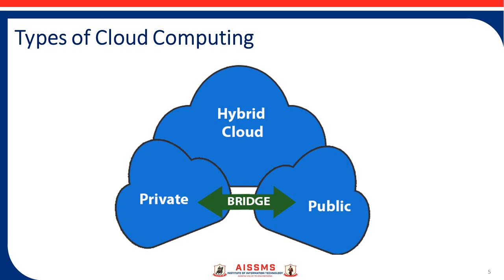A private cloud may physically be located on the company's on-site data center or hosted by a third-party service provider. What is meant by the hybrid cloud? It is the combination of public and private cloud, which is bounded together by technology that allows data and applications to be shared between them. The hybrid cloud provides flexibility and more deployment options to the business.